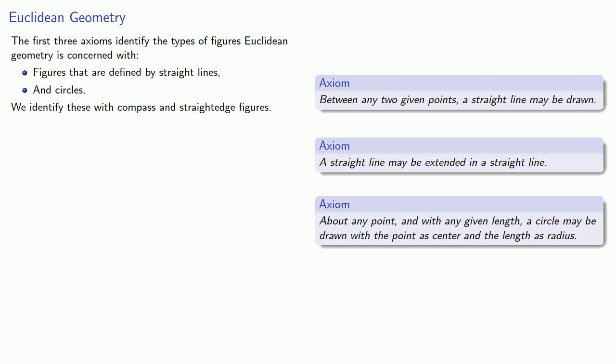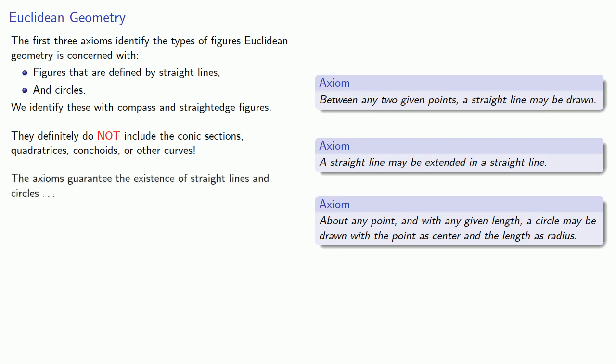And we can do a lot with compass and straight edge constructions. However, there are some notable absences. The axioms of Euclidean geometry do not include the conic sections, the quadricists, conjoids, or any other curves. In short, the axioms guarantee the existence of straight lines and circles, and nothing else.